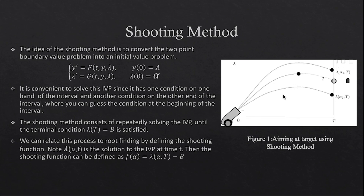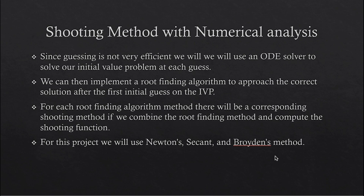We can organize this process by taking the difference between our target and where our trajectory ends up as the function. Let lambda of t denote the solution of the initial value problem at time t. This lets us define the shooting function in order to satisfy the terminal condition. Since this function will be zero, this suggests that the shooting method is a method where we are finding a root of a function. This gives us the difference between the terminal value of lambda and the target, which is b. Since adjusting our guess multiple times will not be very efficient, we will need an ODE solver to solve our initial value problems faster. But an ODE solver alone still won't be enough, since we will still be guessing randomly. We need a root-finding algorithm that will take our initial solution of the ODE solver and use it to approach the correct guess — the solution that satisfies the terminal condition.